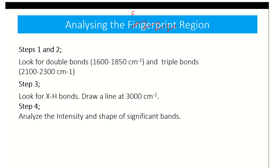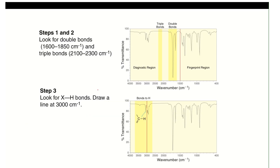Always analyze the functional group region — look for double bonds, triple bonds, and anything bonded to hydrogen. Draw a line at 3000 and probe what's to the left. Then analyze the intensity and shape of the bands. For example, if you see something in the 1600 region and nothing in the triple-bonded region, and there's a medium sharp peak just above 3000, you know you have some sort of alkene.